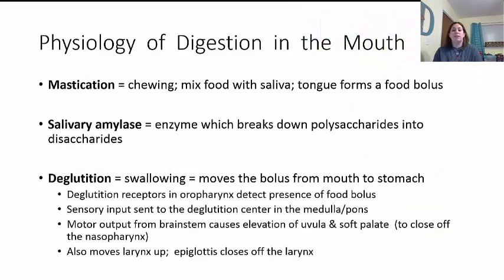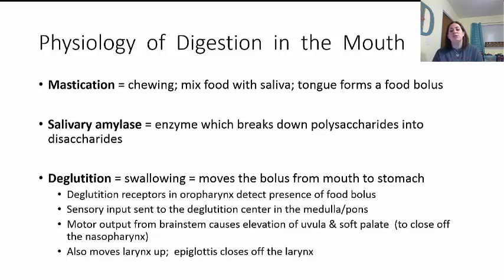Now let's look at how the mouth functions — the physiology. The first thing the mouth is useful for is mastication, or chewing. This helps with ingestion; you mix your food with saliva, and the tongue helps form what we call a food bolus to help you swallow. Salivary amylase is released — the enzyme that starts the breakdown of polysaccharides, which are complex sugars, into simpler disaccharides. If we don't chew enough before we swallow, we've all felt that discomfort of something moving down — especially chips with sharp edges — which is why it's really important to chew and mix your food well before swallowing.